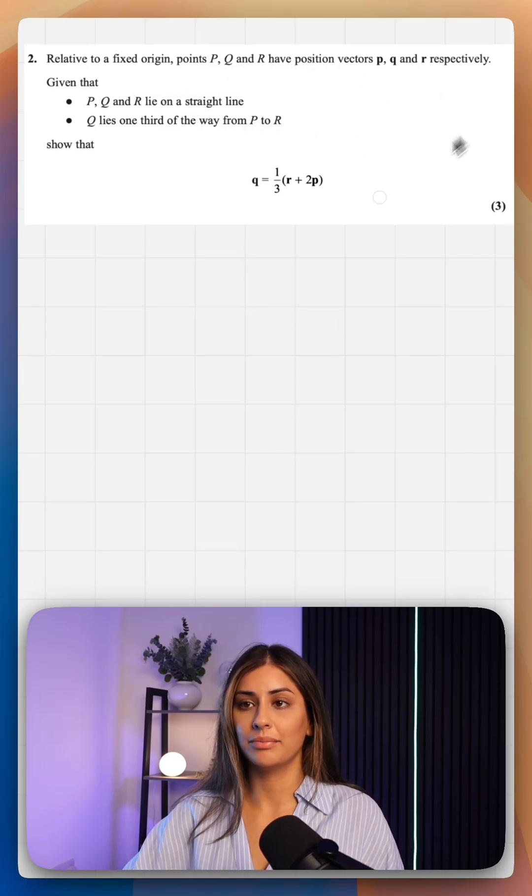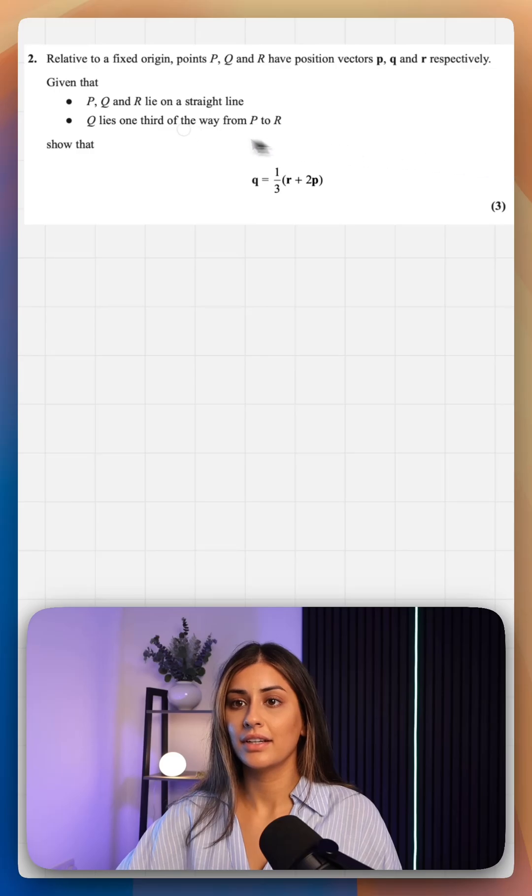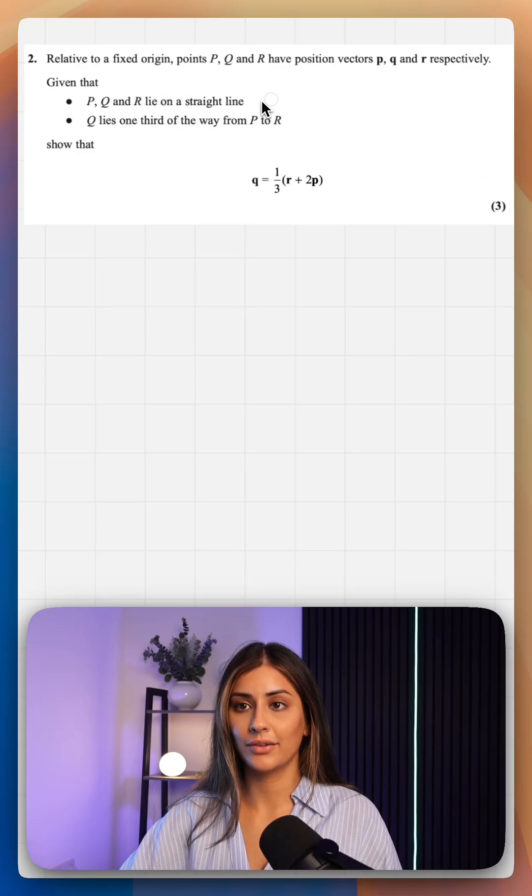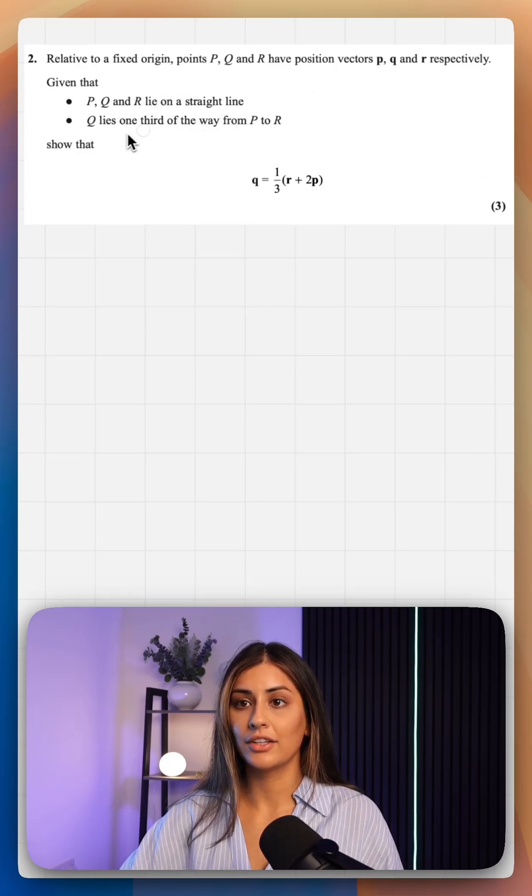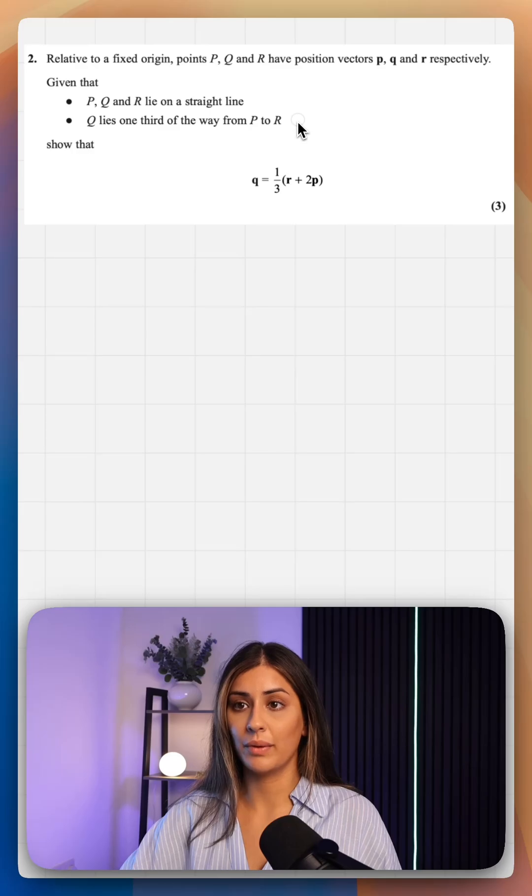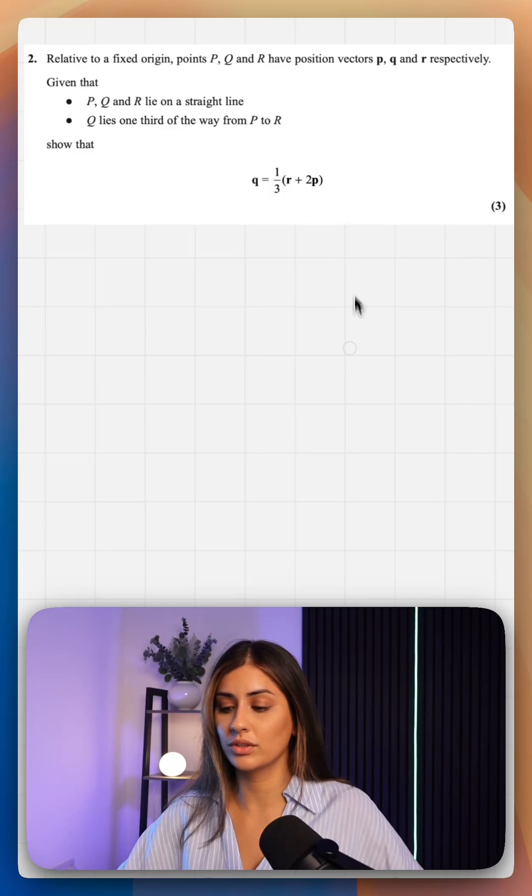points P, Q and R have position vectors P, Q and R respectively. Given that P, Q and R lie on a straight line and Q is one third of the way from P to R, show that this equation holds.